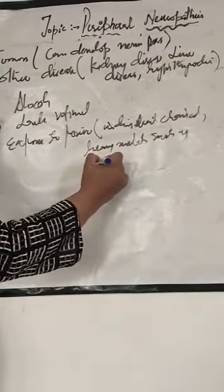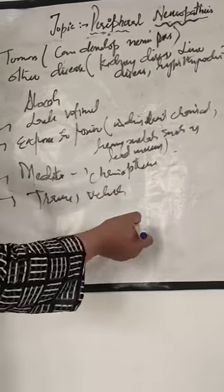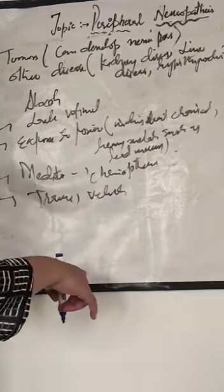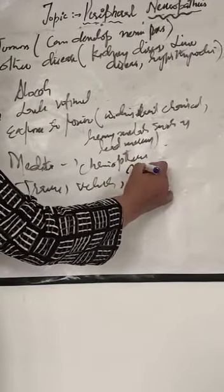Medical medications are another cause — for example, if a patient undergoes cancer treatment or chemotherapy, these can cause peripheral neuropathy. Finally, trauma — pressure on the nerve, injury, or nerve breakdown due to falls or sports injuries can also lead to peripheral neuropathy.